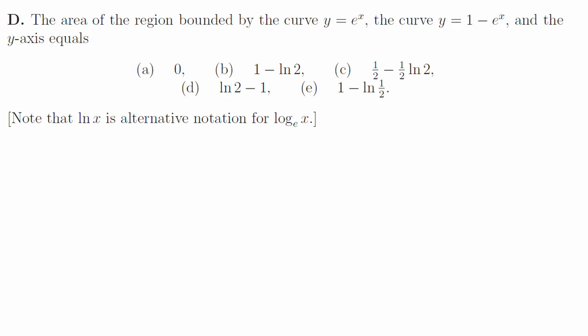1d. The two curves intersect when x is minus log base e of 2, which is to the left of the y-axis, so we need to be careful to integrate from minus log 2 up to 0. If we do that carefully, we get 1 minus log 2, which is b.